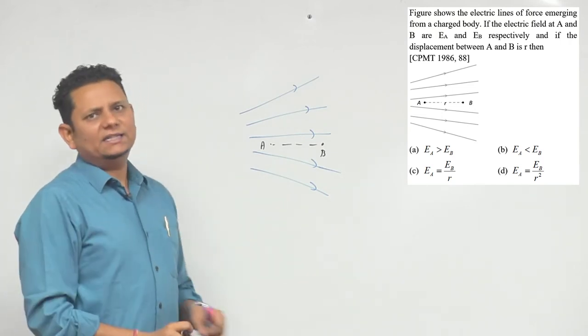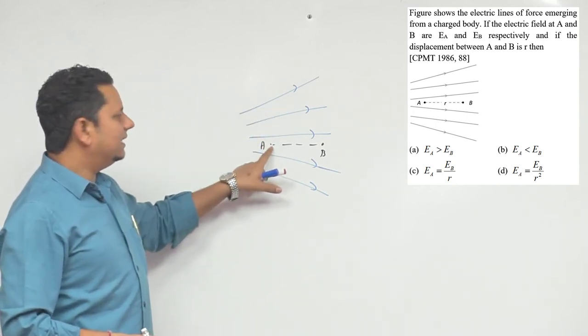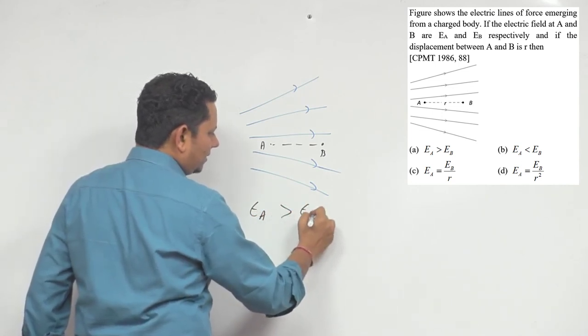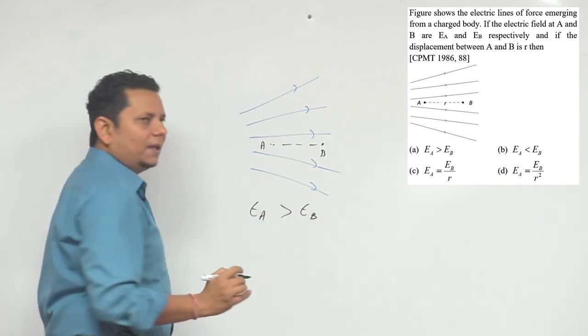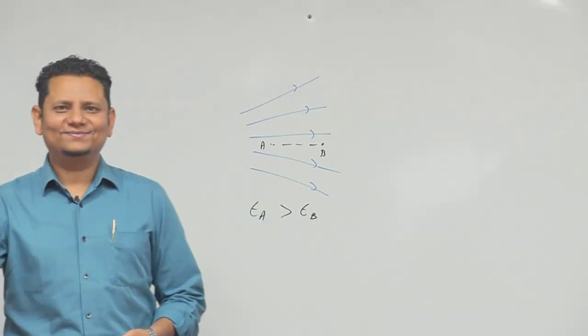Now because the electric field line density at A is greater, we can say that the electric field at A is greater as compared to the electric field at B. Hence, option A would be the right answer.